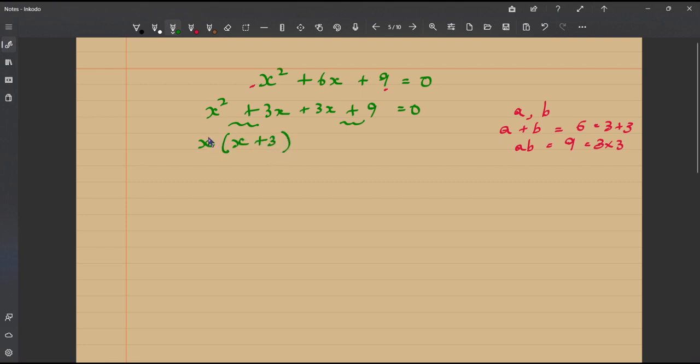So, if you multiply x into x, x into x will give you x squared and x into 3 will give you 3x and similarly in the second group your common factor is 3 and in brackets x plus 3, this is equal to 0.